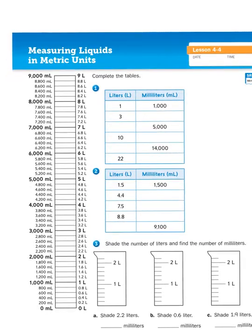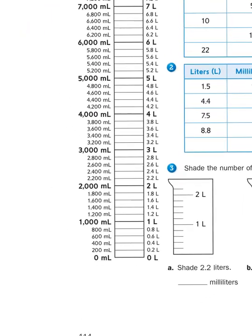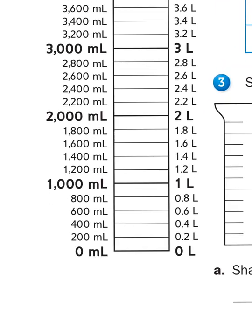At the top of the page it says complete the tables, and at the top of the first table it tells us that 1 liter is equivalent to 1,000 milliliters. Those are our two units of measure. To the left of this table we have a handy measurement guide which also shows us that 1 liter is the equivalent of 1,000 milliliters.